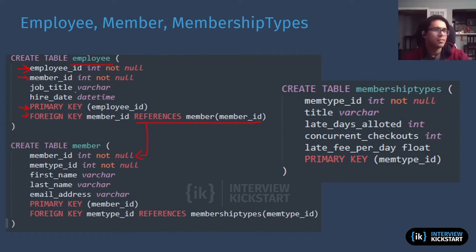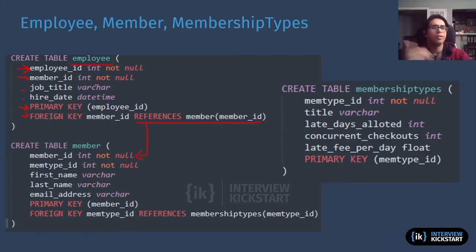Besides that, in the employee table you just have other attributes like job title and hire date — just some other attributes that might be needed for employee. And if you're looking at the schema on the side of this, you can see how we've gotten everything.